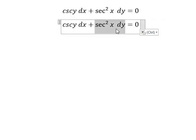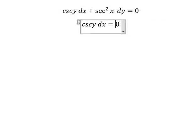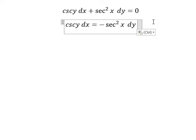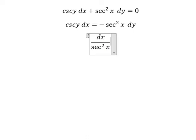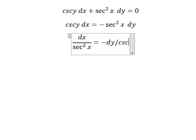We put this one to the right. Next we divide both sides by secant of x square and cosecant of y, so we will have dx over secant of x square equal to negative dy over cosecant of y.